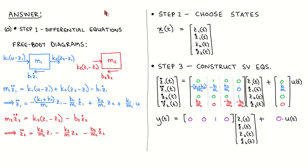Let's have a look at the solution. To construct the state variable model, we have to derive the differential equations, choose the states, and then construct the state variable equations. To derive the differential equations, we draw the free body diagram of the blue object and the free body diagram of the red object. We then use Newton's second law of motion to write that the mass times the acceleration of the blue object is equal to the sum of the forces acting on it. This is the first differential equation.